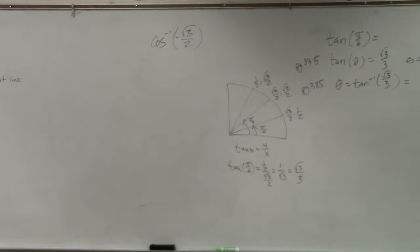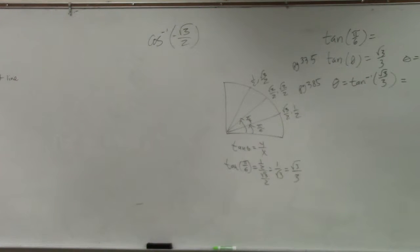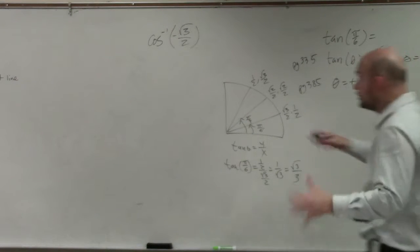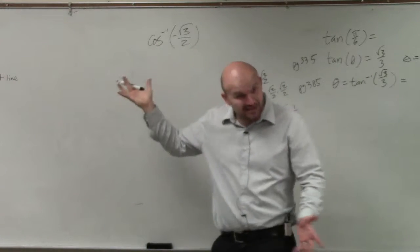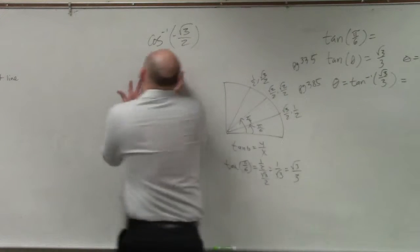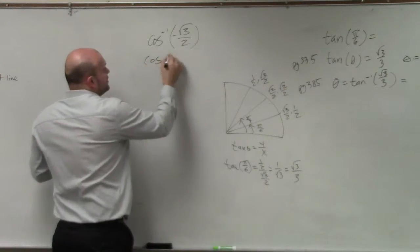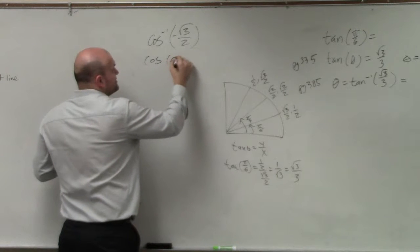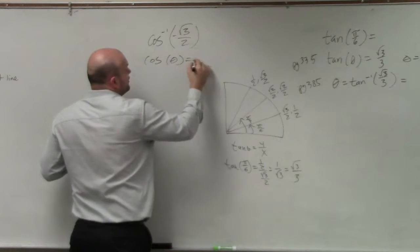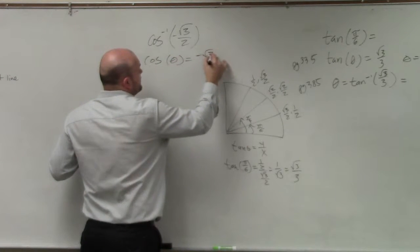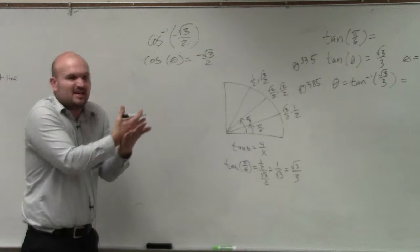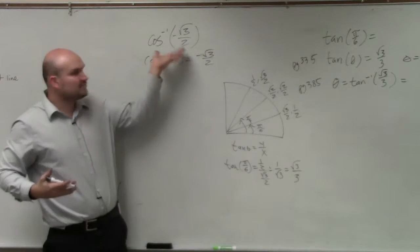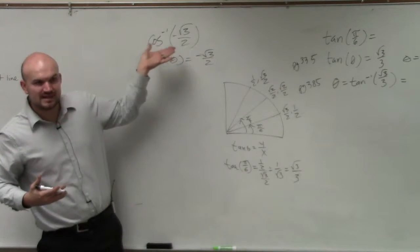Remember, cosine inverse of negative square root of 3 over 2 — that's looking for the angle. So you're looking for the angle. It's basically the same thing: cosine of what angle equals negative square root of 3 over 2? Basically the same thing as what you just did on your previous homework. It's just written with inverse cosine.